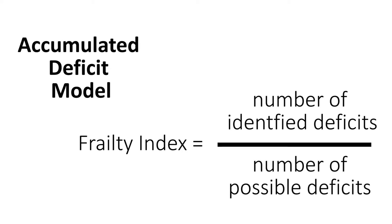The Accumulated Deficit Model is based on the Frailty Index. This index focuses on the number of identifiable deficits that an individual could have, selected from a list of possible deficits. The model doesn't prescribe what deficits should be looked at, but that as long as an appropriate list is developed, the number of identified deficits relative to the number of possible deficits is indicative of the frailty status of the individual.